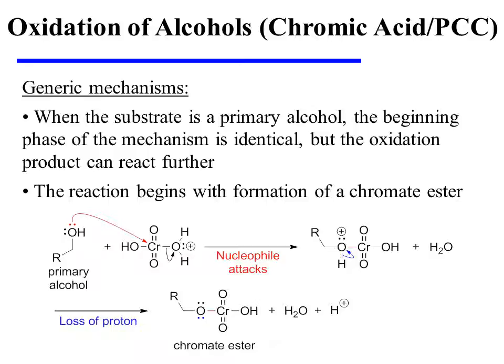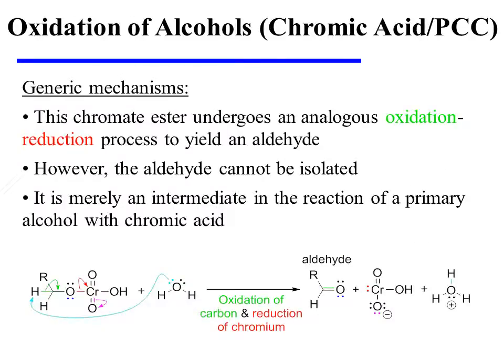As expected, this reaction will begin with the formation of a chromate ester when the primary alcohol attacks chromium, displacing water. The oxonium ion loses a proton and the chromate ester is formed. This chromate ester then undergoes a comparable oxidation-reduction process to yield an aldehyde.